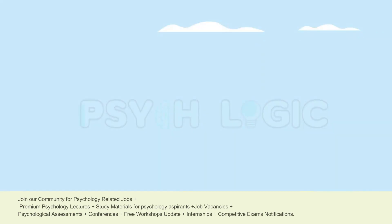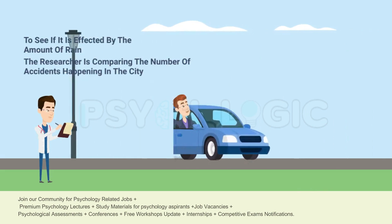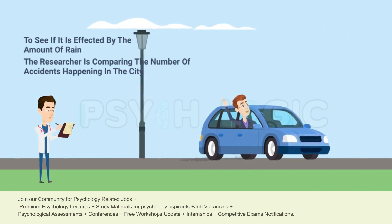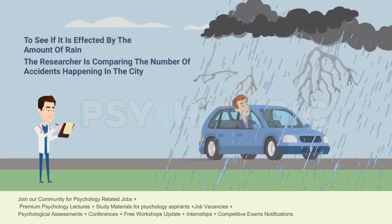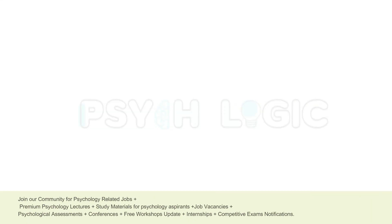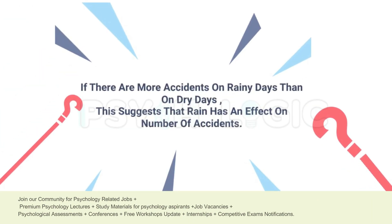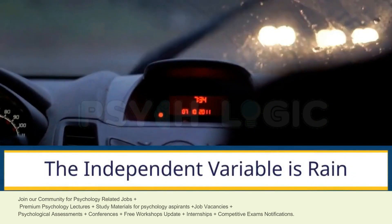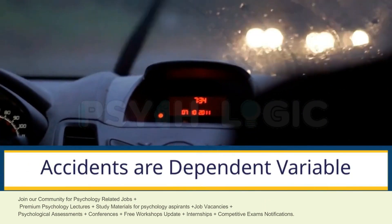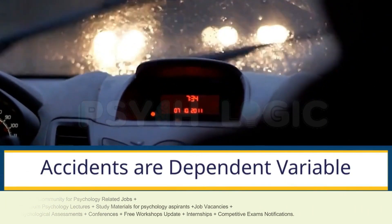The dependent variable is the variable that the researcher measures to see how it is affected by the independent variable. In this case, the dependent variable is the number of accidents. The researcher will count the number of accidents on rainy days compared to dry days — for example, summer versus rainy season. The researcher might find more accidents on rainy days, suggesting that rain has an effect on accidents. In other words, rain is the independent variable — the cause — and number of accidents is the dependent variable — the effect.